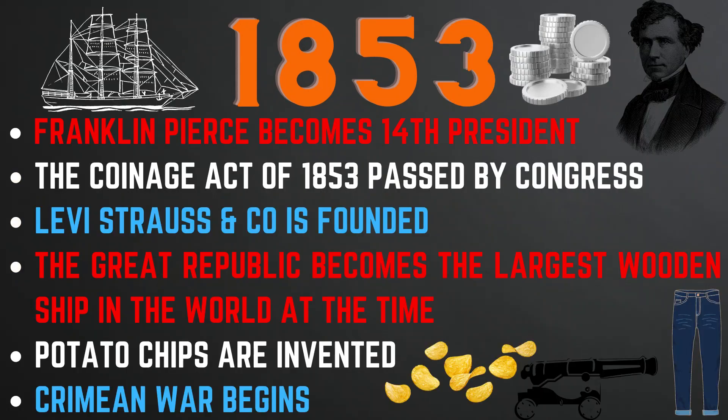In 1853, Franklin Pierce became the 14th president and the Coinage Act of 1853 was passed by Congress, which lowered the silver content of some silver coins by reducing coin weight. The coins affected included the half dollar, quarter dollar, dime, and half dime. Also a three-dollar gold piece was authorized. Levi Strauss and Company was founded, the Great Republic became the largest wooden clipper ship in the world, potato chips were invented, and the Crimean War began — a war between Russia and the alliance of England, France, Sardinia, and the Ottoman Empire.